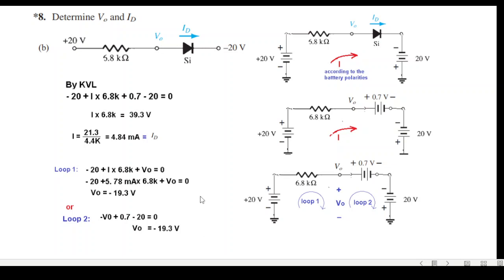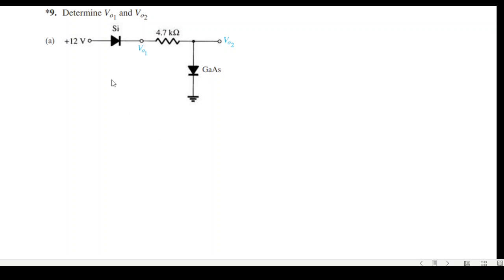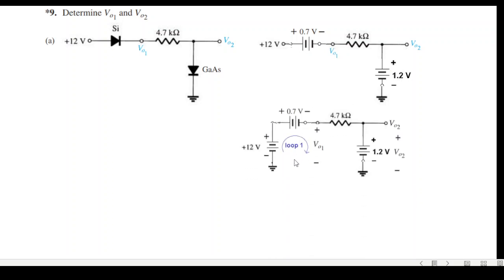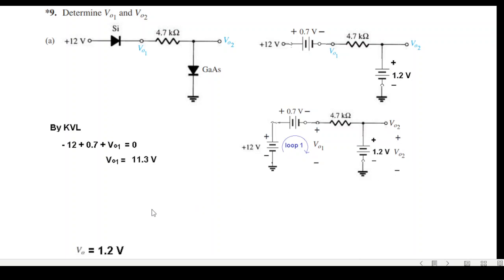Question 9: we have a silicon diode and a gallium arsenide diode. The positive voltage makes the current flow such that the current direction and diode arrows are the same, so both diodes are forward biased. We replace them with 0.7V for silicon and 1.2V for gallium arsenide. V01 is found from the KVL loop: minus 12 plus 0.7 plus V01 equals zero, giving V01 equal to 11.3V. V02 is directly across the 1.2V source, so V02 equals 1.2V.